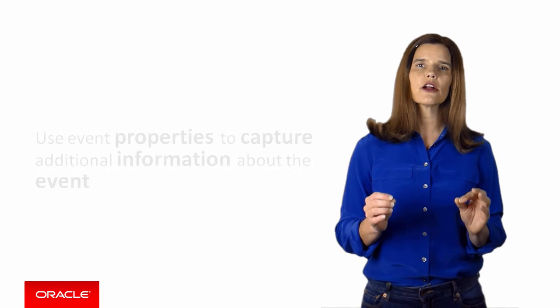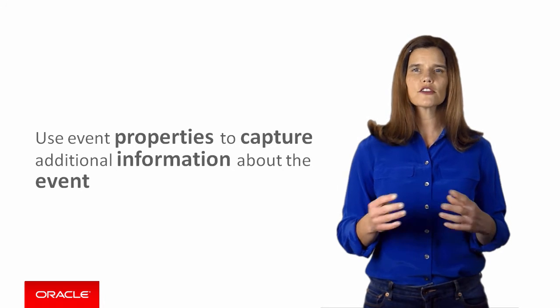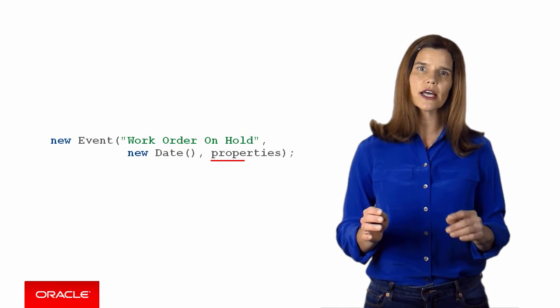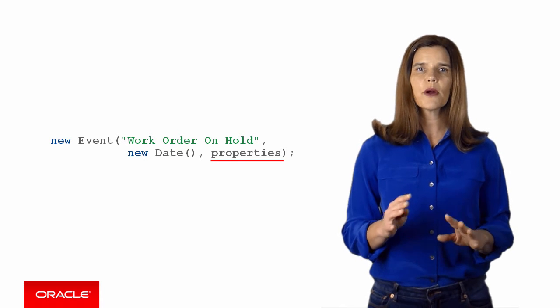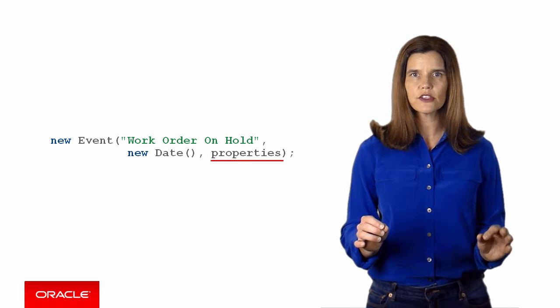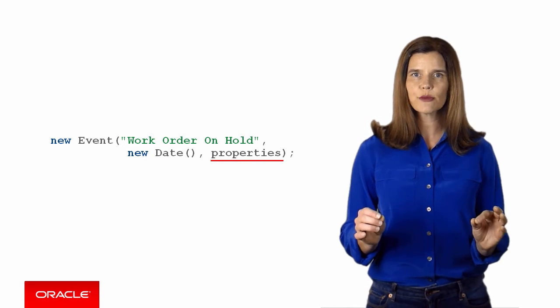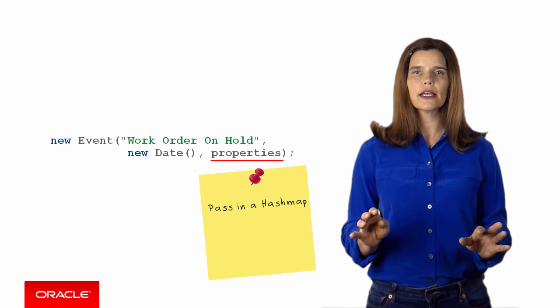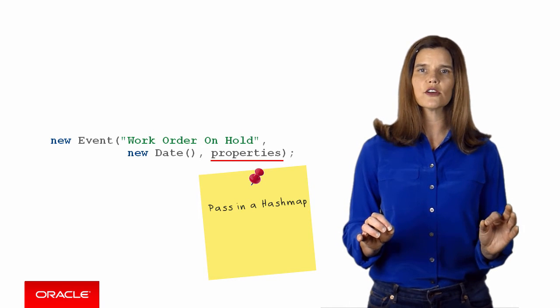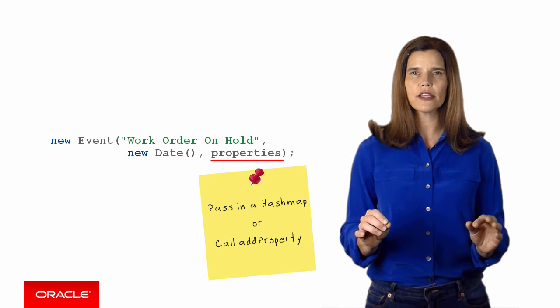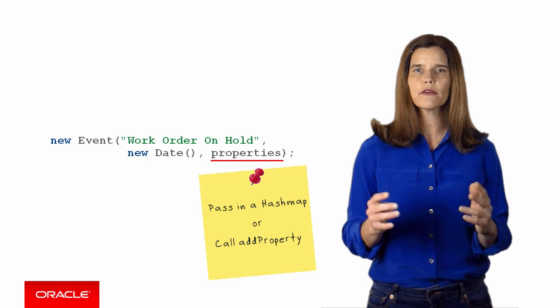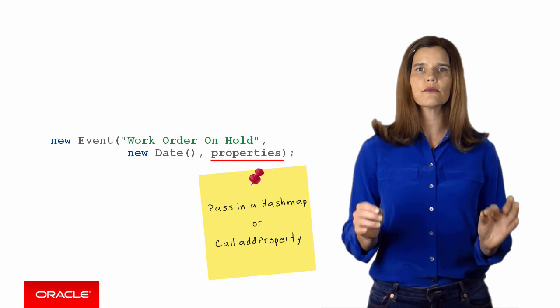We're not quite done. Knowing that the work order was put on hold is useful, but since you want to figure out what's causing delays, you need to capture additional information about the event. This is where event properties come in. When you construct an event, you can pass in properties that provide additional information about the event. The properties are stored in a hash map of key-value pairs, so you can define as many properties as are needed to describe the event. You can add the values to a hash map and pass the hash map to the constructor in place of the null value that we specified earlier, or you can call the addProperty method to add a key-value pair to the hash map of properties for the event. The key and value must both be strings.